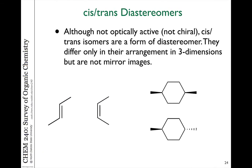Diastereomers we've seen before in the form of achiral molecules — when we have double bonds which could be cis or trans, or ring compounds where we could have the groups on the same side or opposite sides. But the molecules themselves have symmetry. There are planes of symmetry in these molecules that make them achiral, or not different from their mirror images.